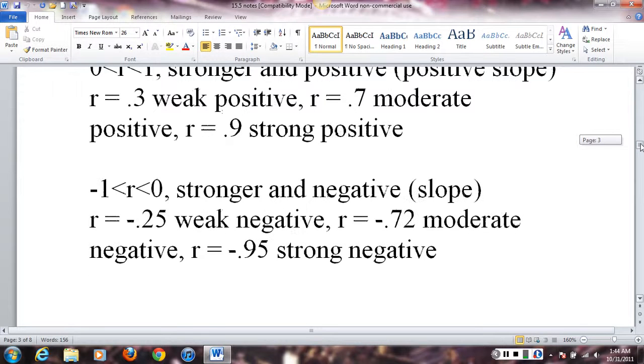Obviously going the other way, between negative 1 and 0, we have negative slope, again, in a linear sense. Closer to 0, so negative 0.25, also considered weak. Moderate may have negative 0.72, I gave you. Strong around 0.9, or in this case, negative 0.9.